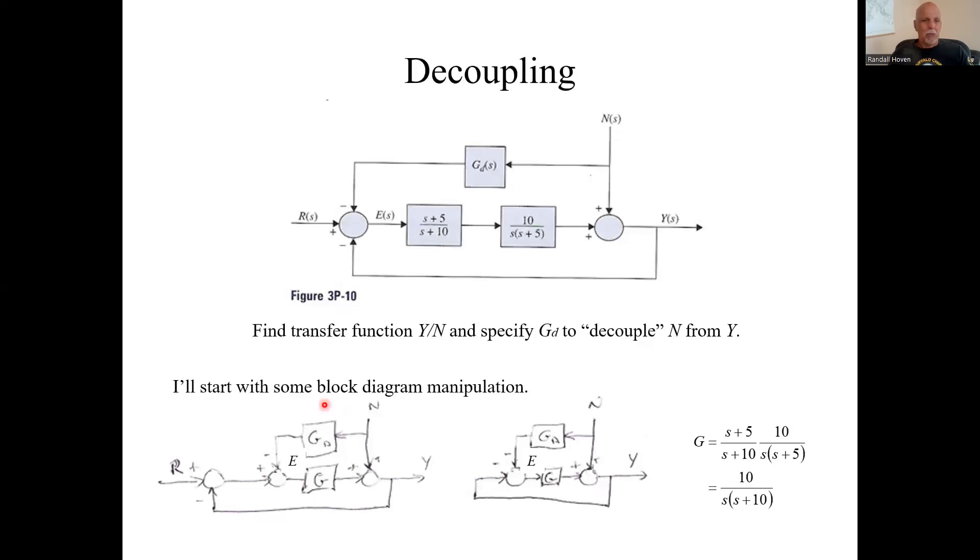So one way to go about it is we can start manipulating the block diagram. Here's this block diagram redrawn where I'm just going to call these guys in a series. I'll just call that G, and I'll label this while that's still labeled N.